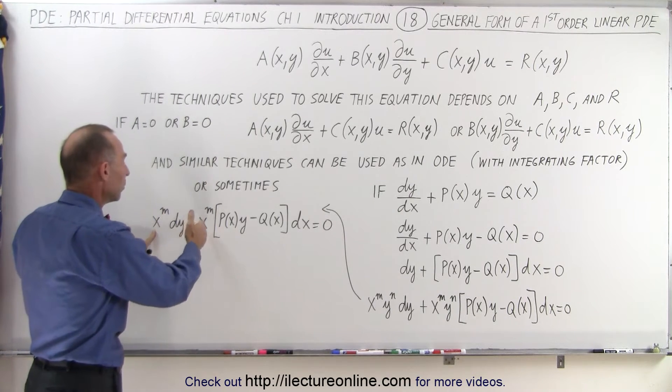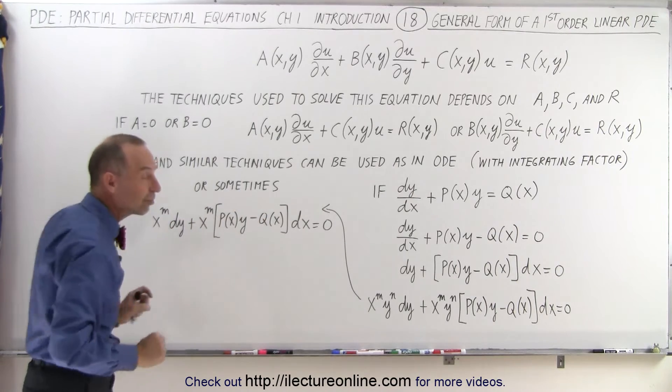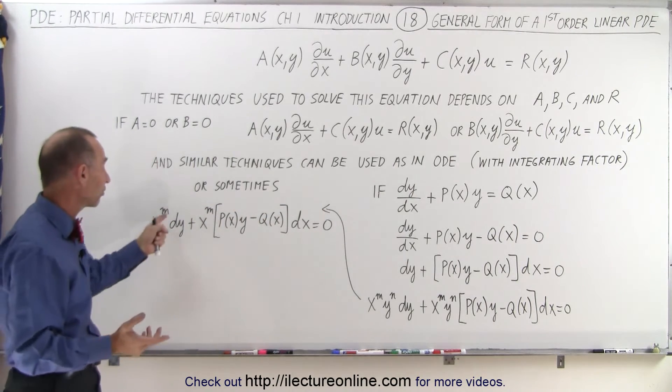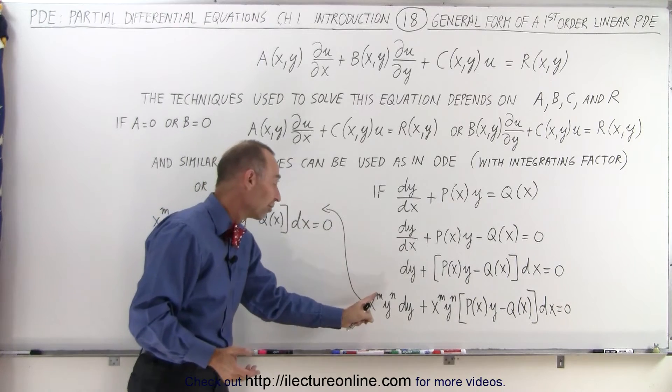For example, x to the n, multiply that with both of the terms. And then all we have to do is find the values for m, or in this case, find the values for m and n.